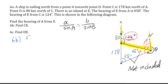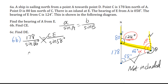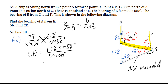Therefore: 178 over sine 66 degrees equals CE over sine 58 degrees. Cross multiply — same line with the variable goes to the denominator. So CE equals 178 times sine 58 degrees over sine 66 degrees, which gives 165 kilometers for CE.